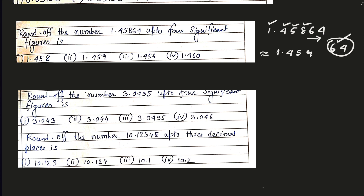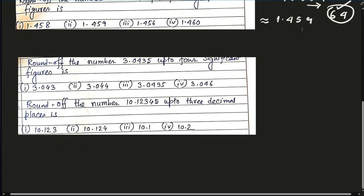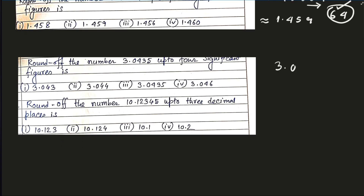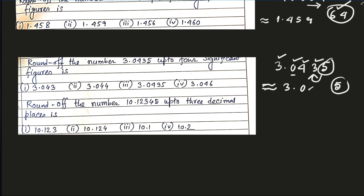Option two is the right option. Round off the number 3.0435 up to four significant figures. First significant digit, second, third, fourth. Option three is the right option.